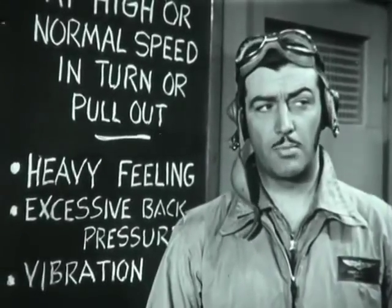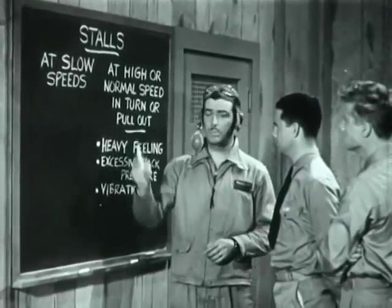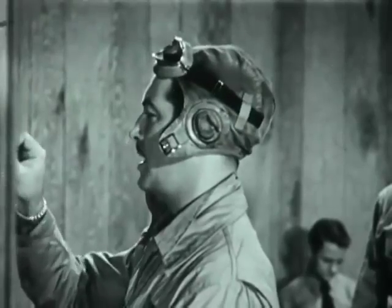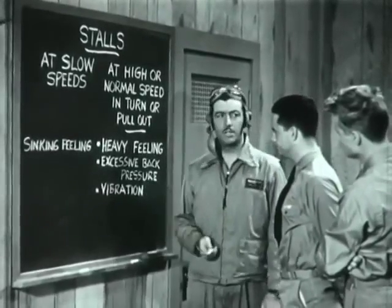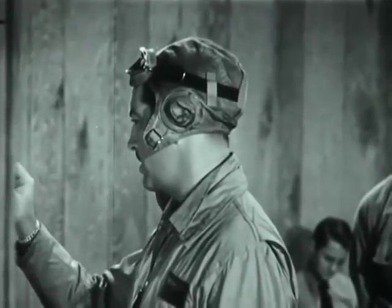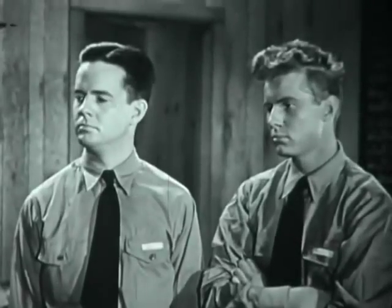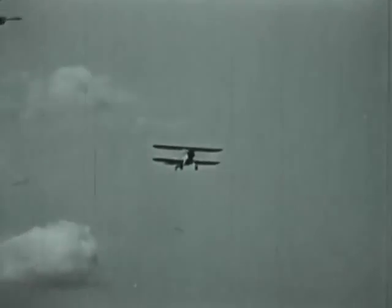Excessive back pressure means pulling back hard on the stick before stalling at high or normal speed — the exception being when the plane is trimmed in an excessively nose-high attitude. For slow-speed stalls the warnings are different: instead of a heavy feeling you get a sinking feeling or loss of buoyancy, the controls feel mushy rather than requiring excessive back pressure, a primary trainer usually develops a shudder, and the plane sounds wrong. Sometimes a stall develops so suddenly the pilot won't have time to recognize the warning.